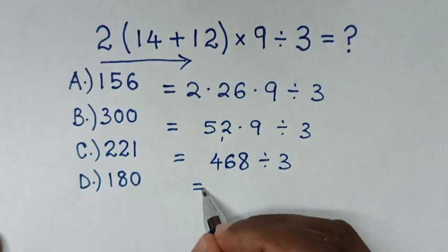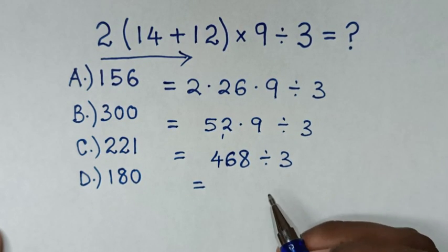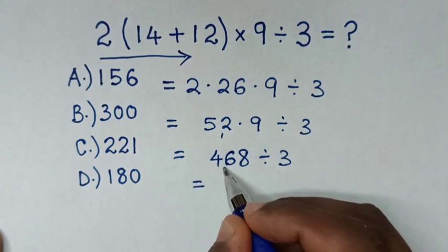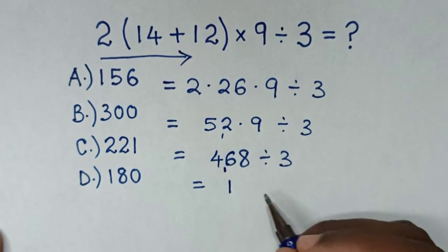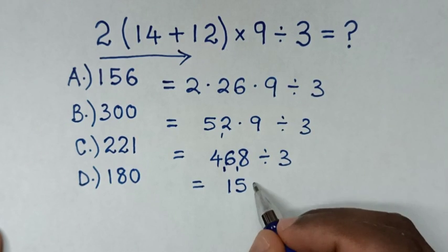468 divided by 3: 4 divided by 3 is 1, carry 1. 16 divided by 3 is 5, carry 1. 18 divided by 3 is 6.